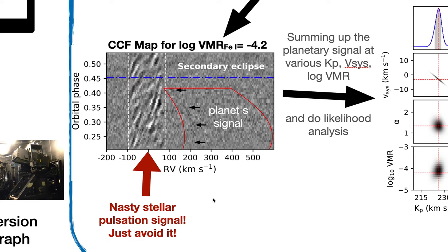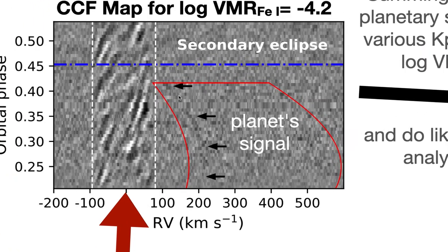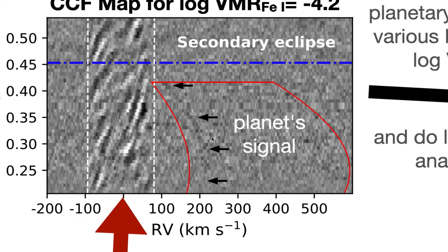As you can see here, because WASP-33b has a delta Scuti star host, there is a stellar pulsation signal whose position can be seen right here. This can lead us to a false positive detection, so we want to avoid that. We can also see dark stripes here as our candidate for planetary signals.